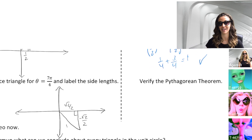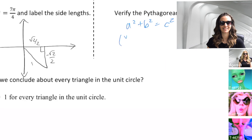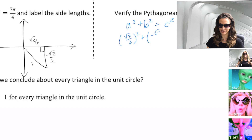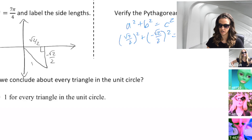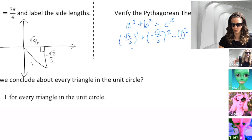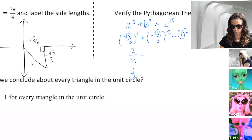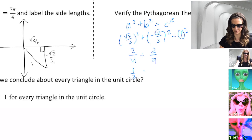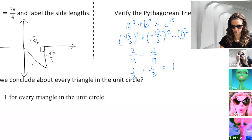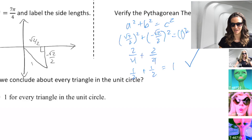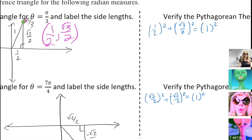Let's do the same for 7π/4. 7π/4 is a 45-45-90 reference triangle, so our side lengths are √2/2 and negative √2/2. Both of those squared: √2/2 squared gives 2/4, which is 1/2. Negative √2/2 squared is the same thing because we are squaring a negative. So we have 1/2 + 1/2 = 1. Pythagorean theorem verified.